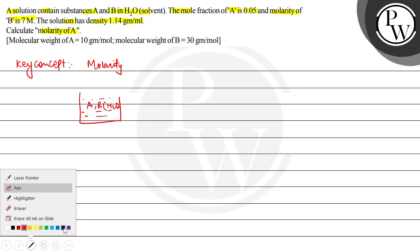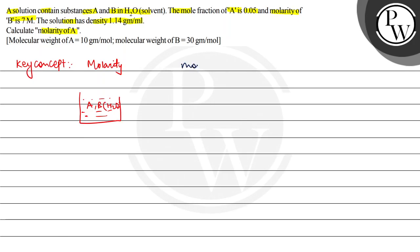Now here we have mole fraction of A is 0.05. That is, number of moles of A divided by number of moles of A plus number of moles of B plus number of moles of H2O equals 0.05.